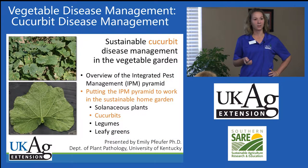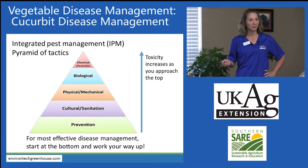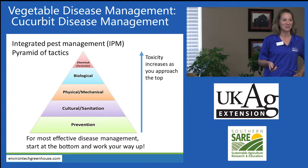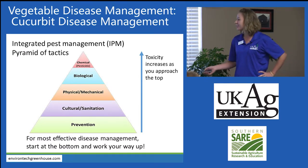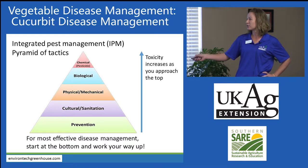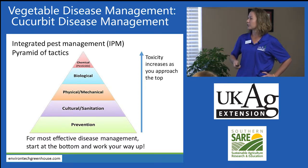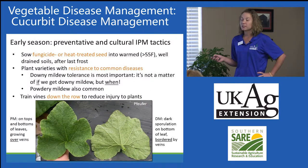Cucurbit disease management in the home vegetable garden. Here again is that IPM pyramid — you'll be able to reproduce this by the time the presentation is done, because repetition is helpful. For most effective disease management, start at the fundamental levels and work your way up toward the more toxic levels in terms of chemistries.